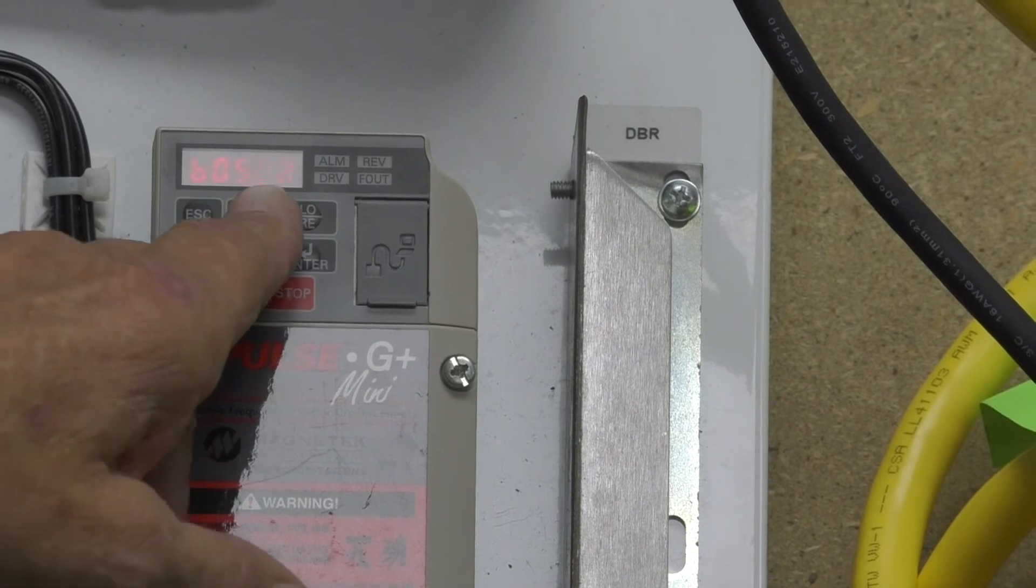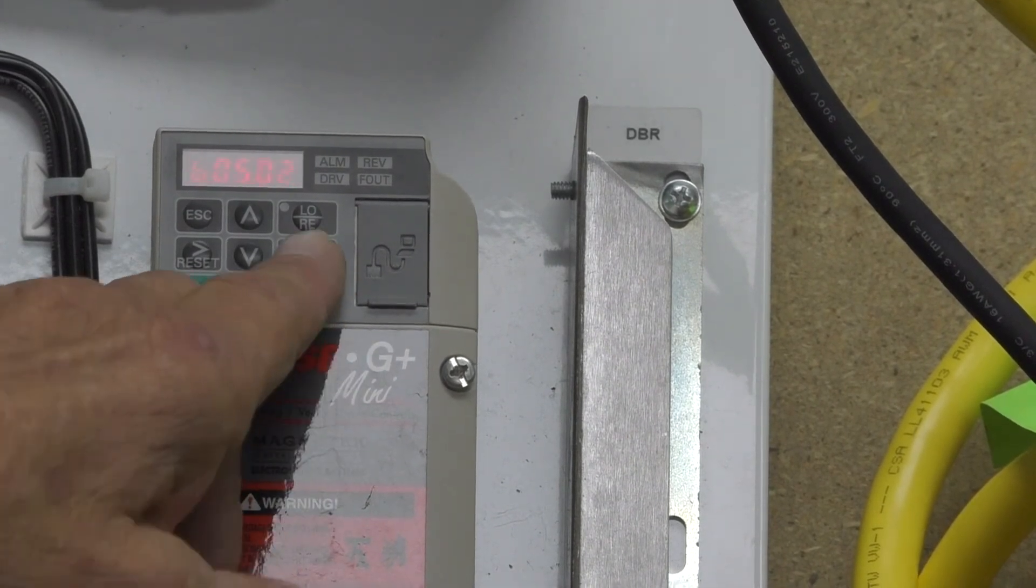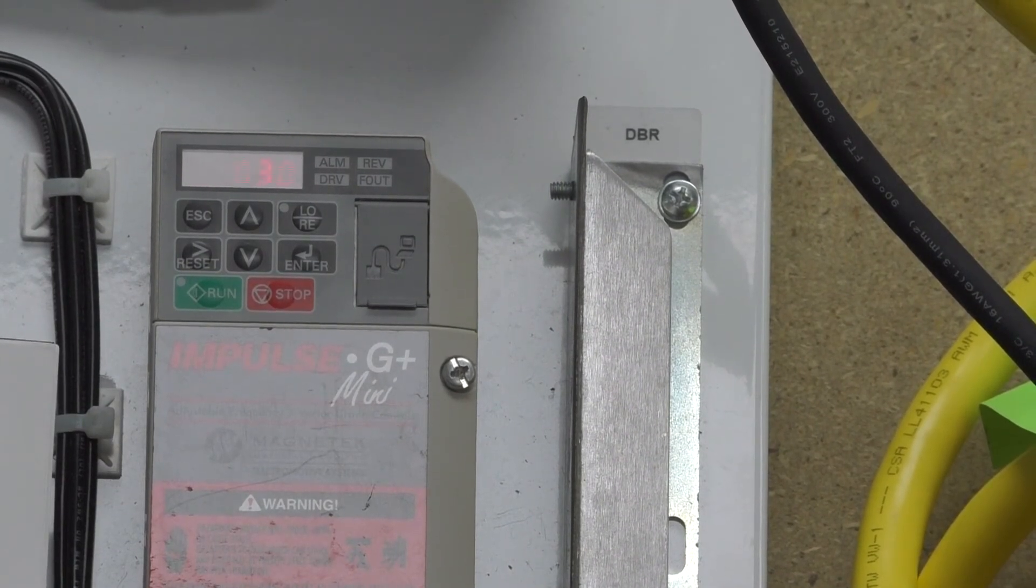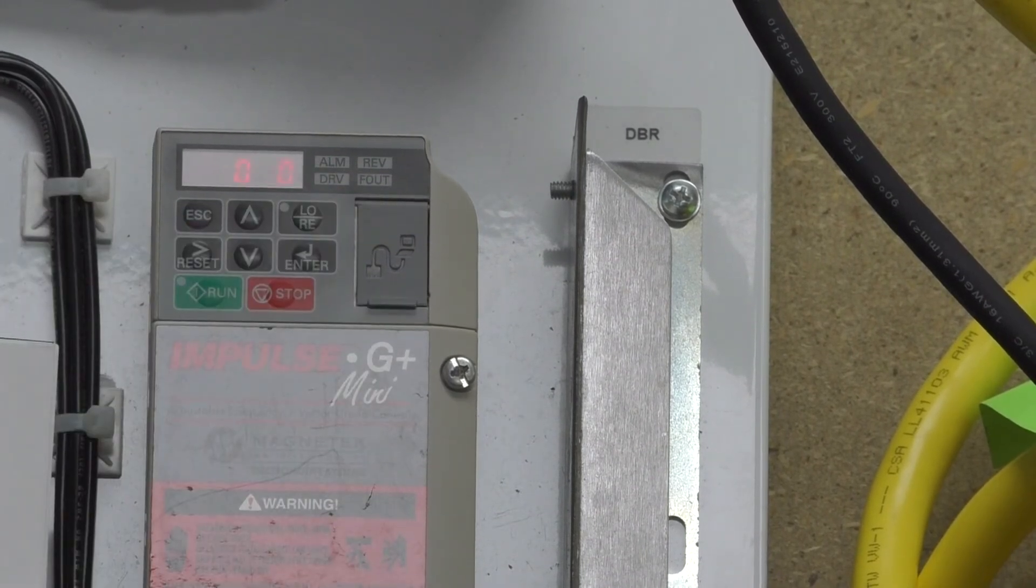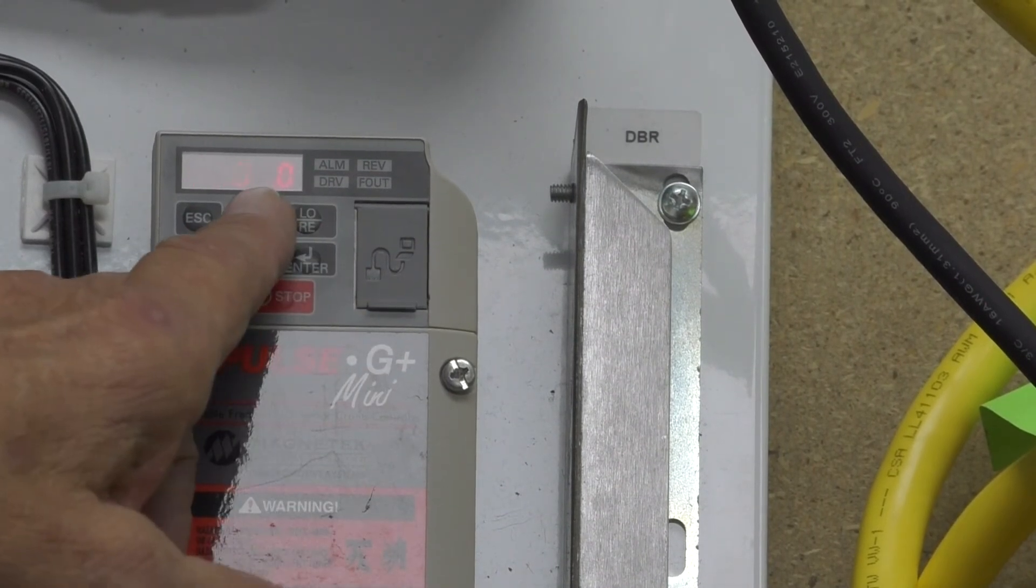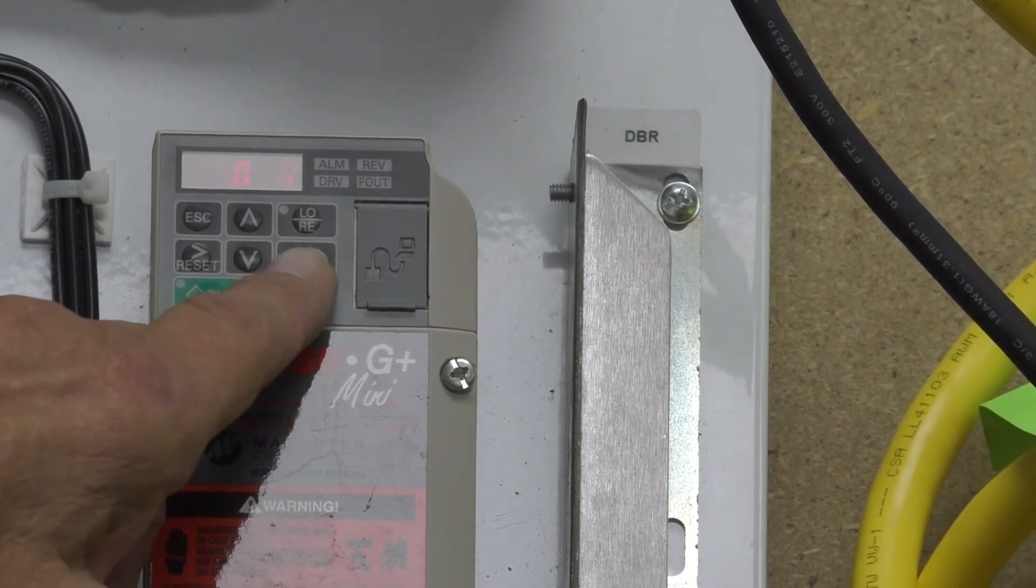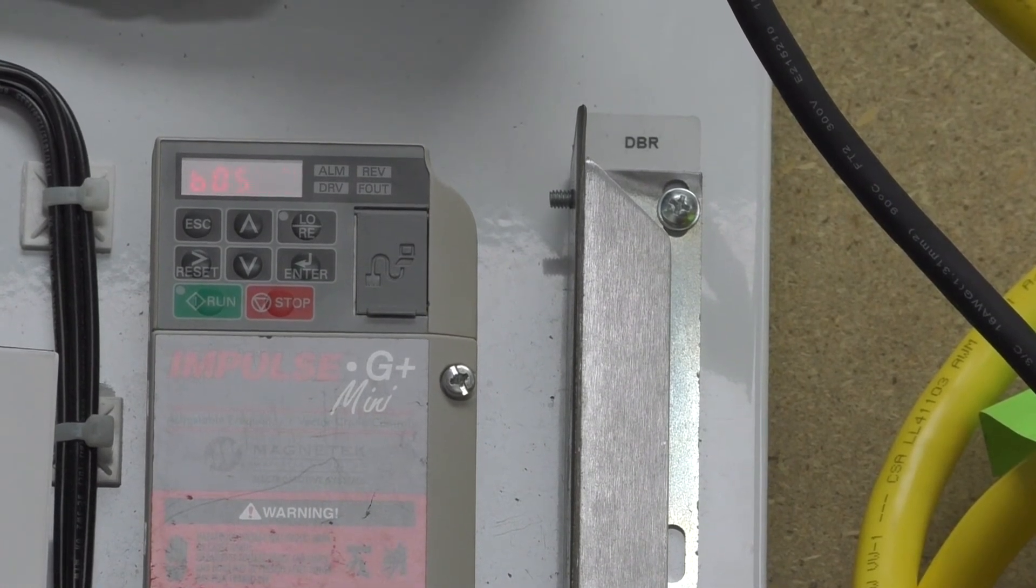To go to deceleration time, it's B0502. You hit enter. It's set for 3 seconds. Let's say we want to set it for 5 seconds. So you hit reset button one time to move it over. You go up twice for 5 seconds. Once you have 5 seconds, you hit enter. Now my deceleration time is at 5 seconds.